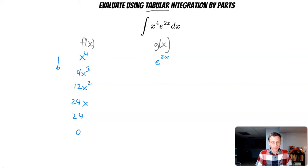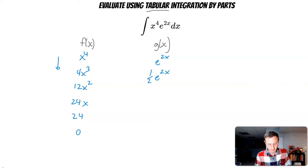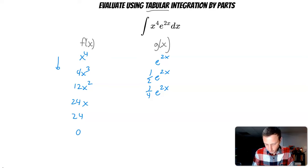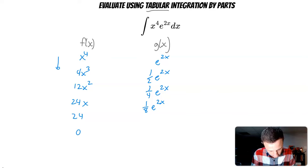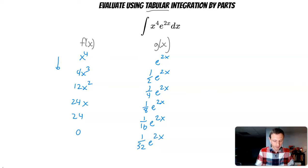Now we do the integrals. The integral of e to the 2x — using the rule that e to the ax becomes (1/a)e to the ax — gives us 1/2 e to the 2x. Try to keep everything in a line and neat. The next integral is 1/4 e to the 2x, then 1/8 e to the 2x, then 1/16 e to the 2x, and finally 1/32 e to the 2x — each time multiplying the constant by one half.